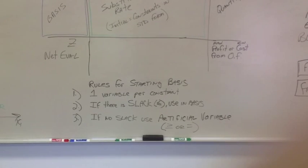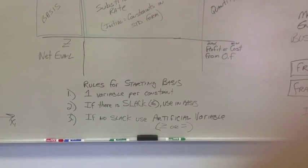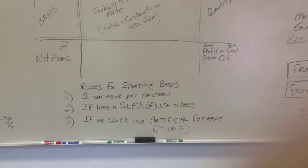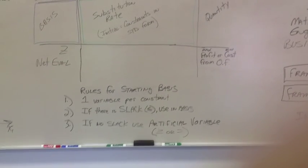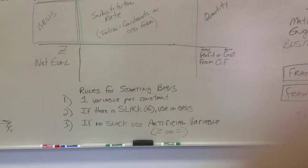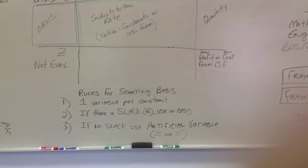If there's no slack, number three, we use the artificial variable. So if we have a constraint that's a greater than or equal to or just an equal to, we put the artificial variable into the basis.